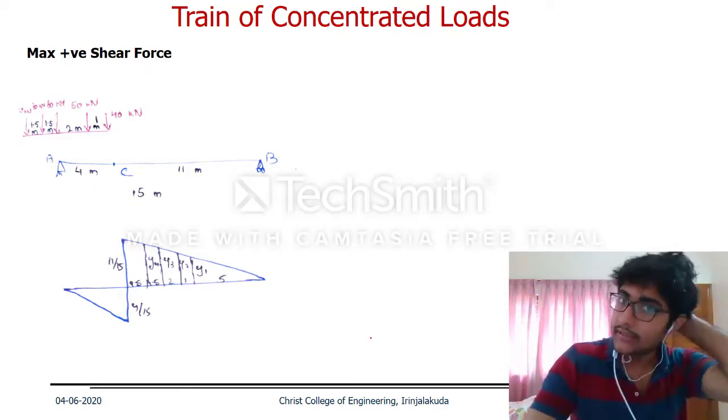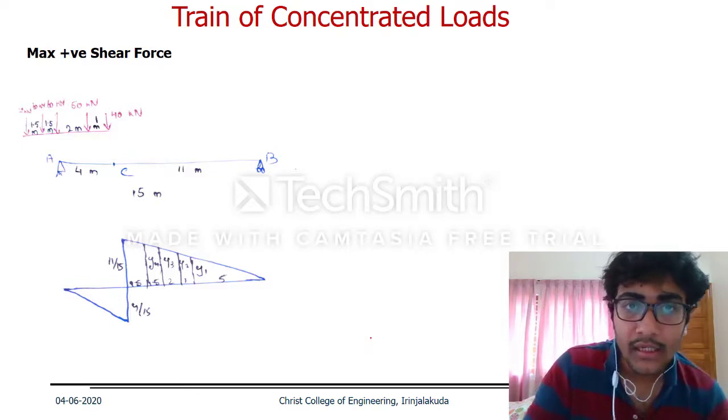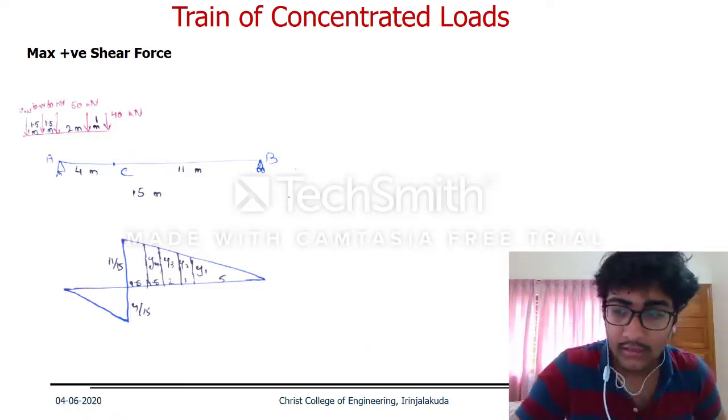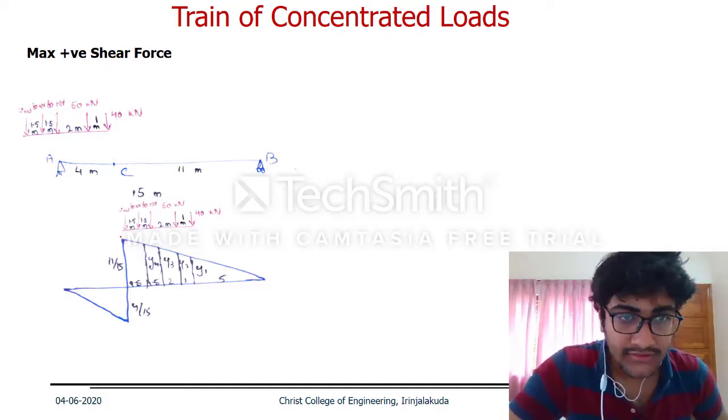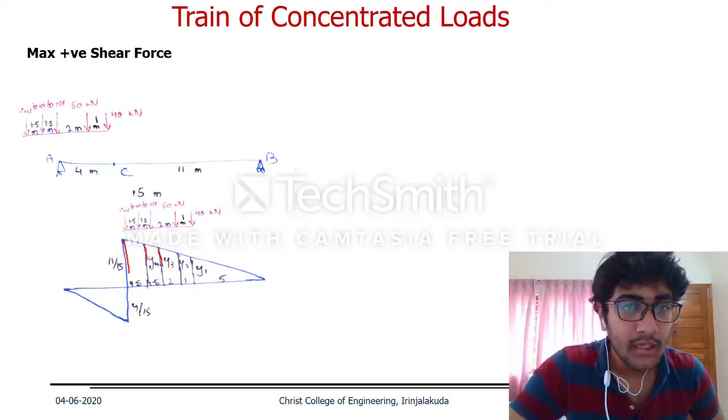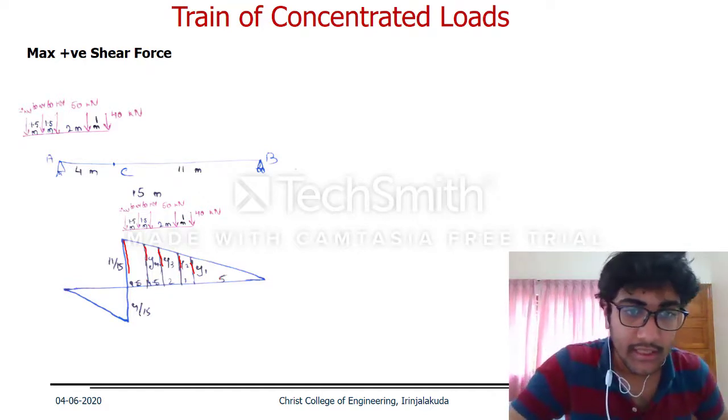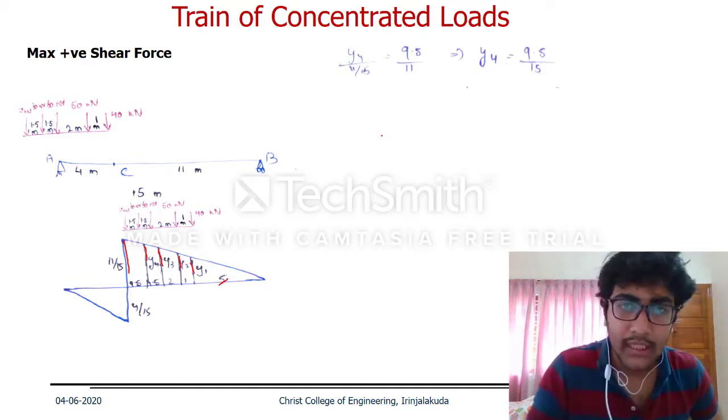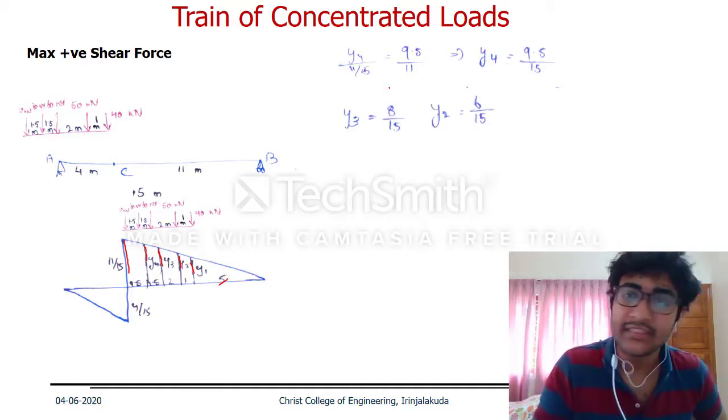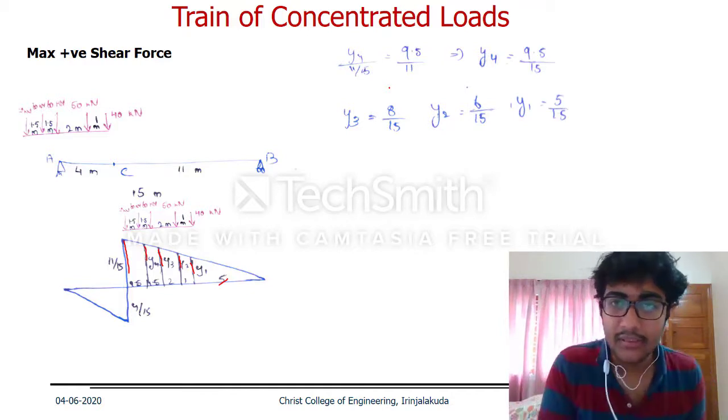Now let's try to obtain the maximum positive shear force. For the maximum positive shear force, the last load can be placed at the section. The total load length is 6 meters. The distance from the section is 11 meters, and the other distance is 5 meters. Using similar triangles, y4 is 9.5/15, y3 is 8/15, y2 is 6/15, and y1 is 5/15.